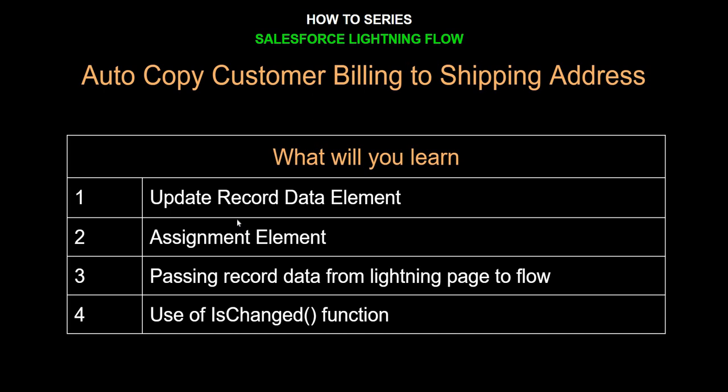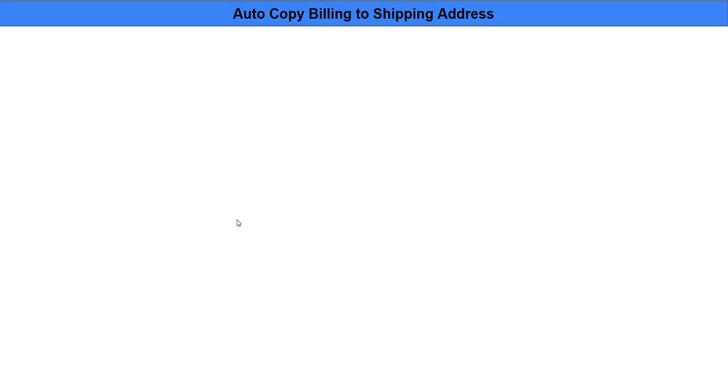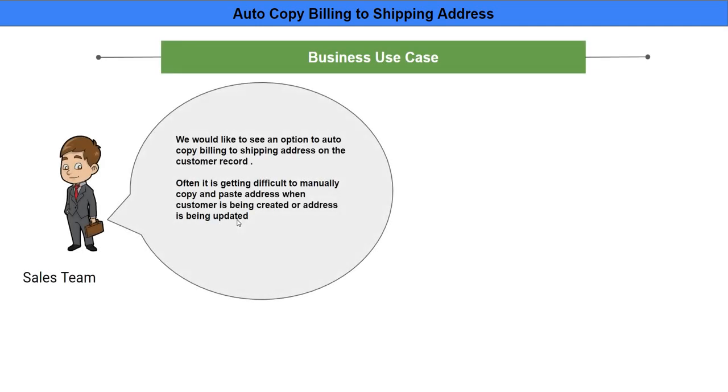So if you are a Lightning customer then you have to implement the logic on your own. In this video we will be implementing that logic using Flow to auto-copy the customer billing address to shipping address. Along the way we will learn how to use the Update Record data element in your flow, how to access record data in flow, and also how to use the ISCHANGED function to find whether a particular field value has been changed or not.